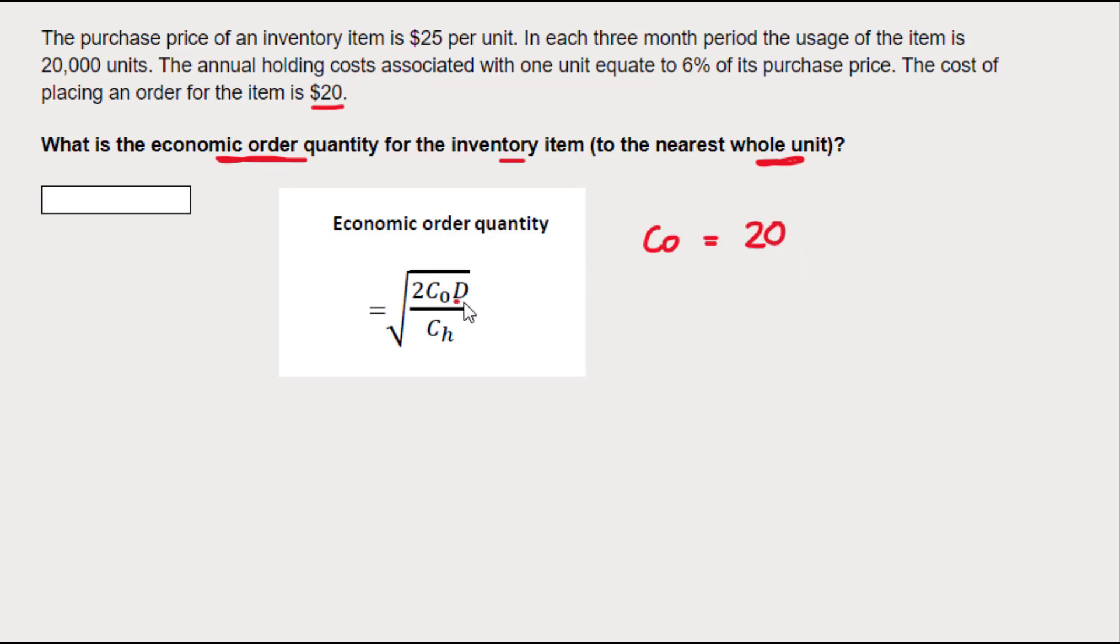What about D? D is total annual demand. Do we have that in the question? It tells us that it's a three month period. That's annoying because D is for a full year.